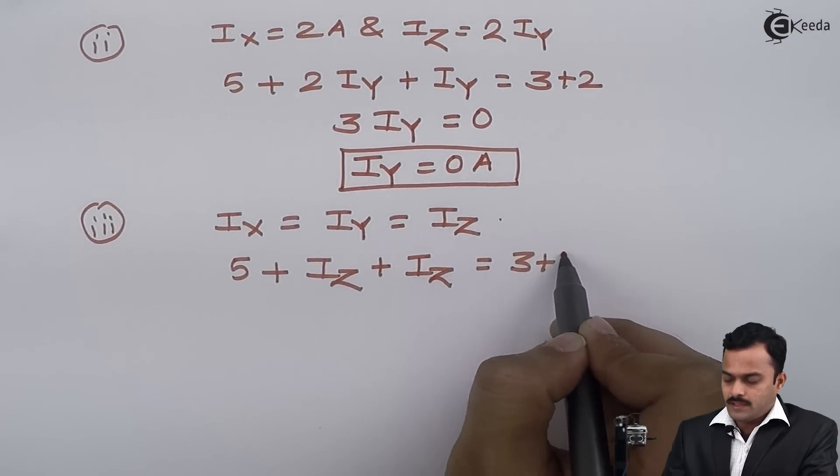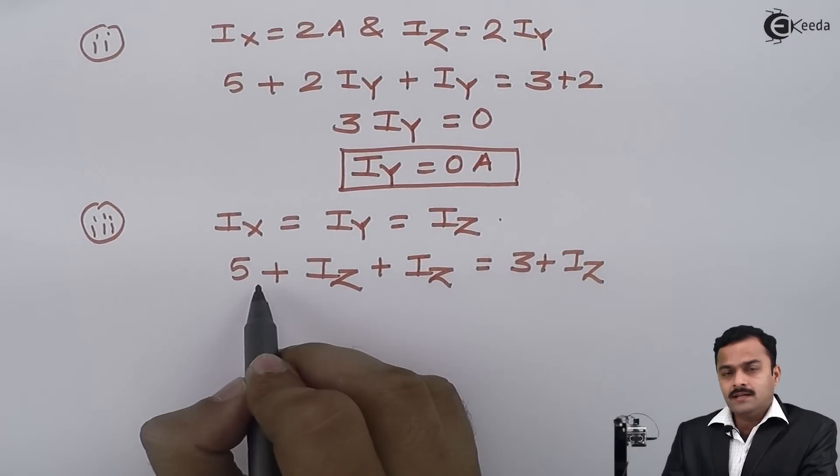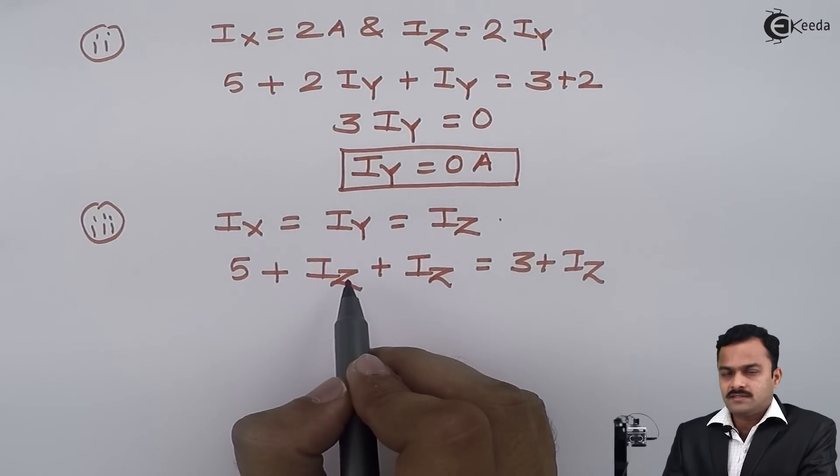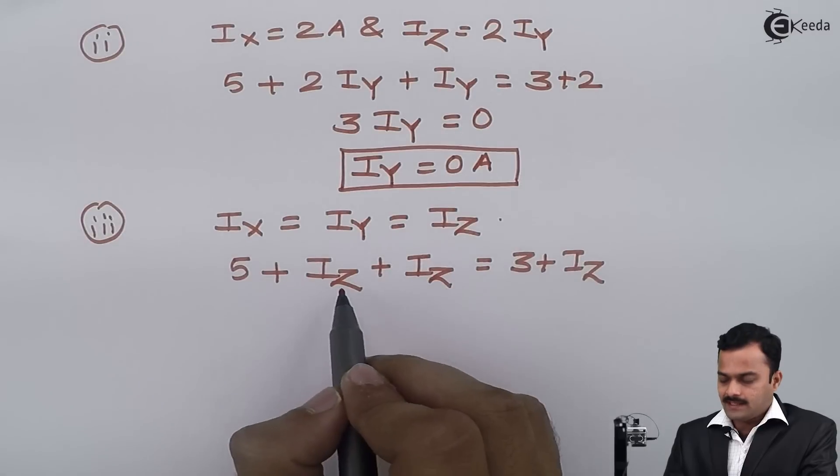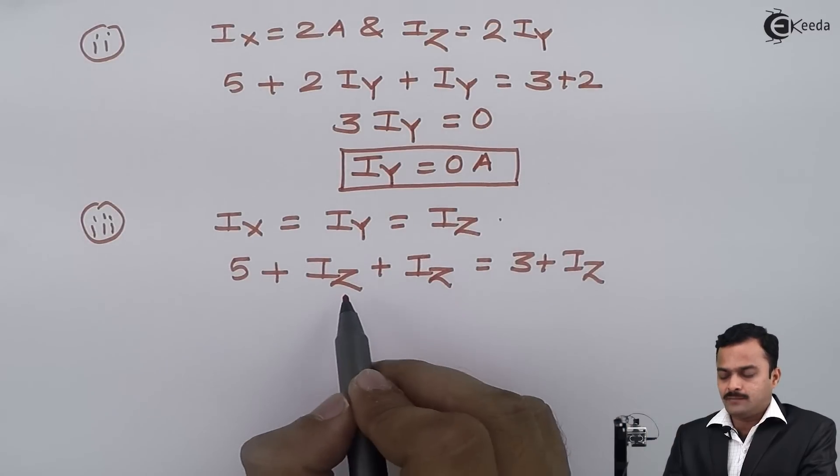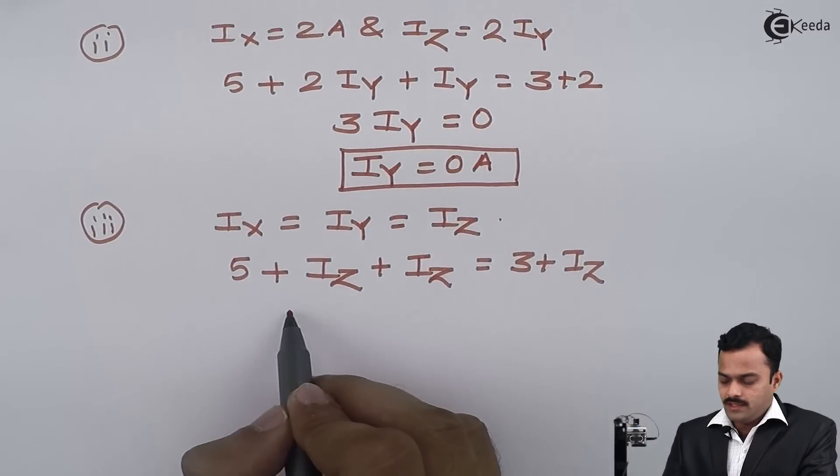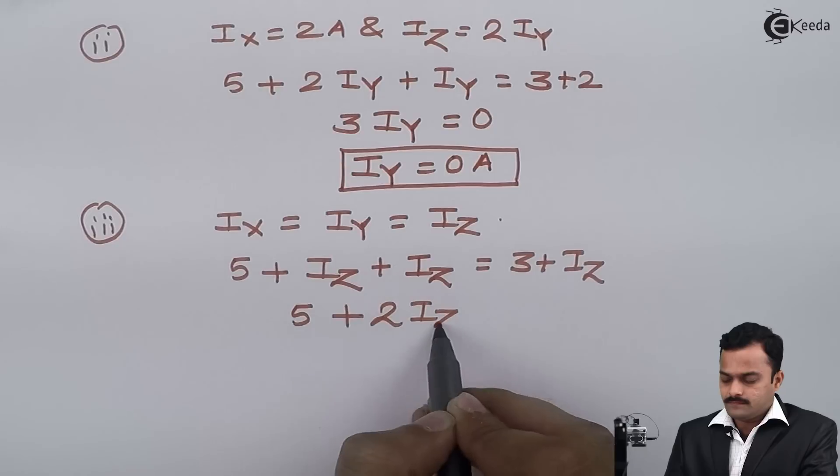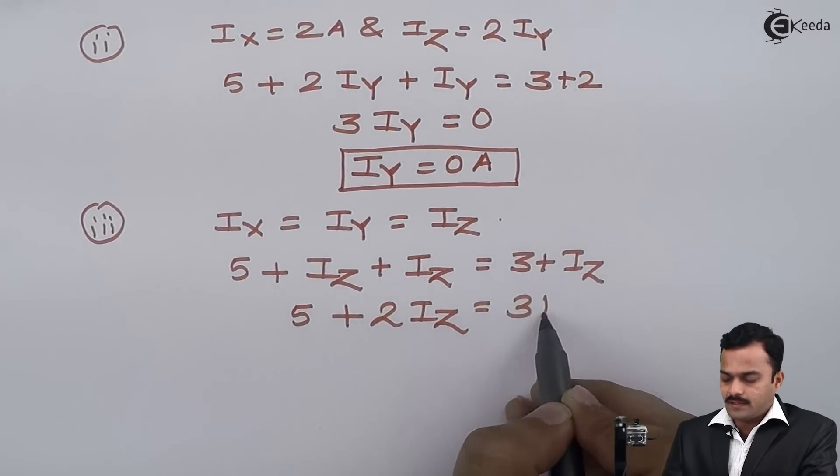So I will get 5 plus iz plus iz equals 3 plus iz. So what I have done in equation number 1, I replaced ix by iz, iy by iz, and ultimately I will get expression in terms of iz. So here if I solve, I will get 5 plus 2 times iz equals 3 plus iz.